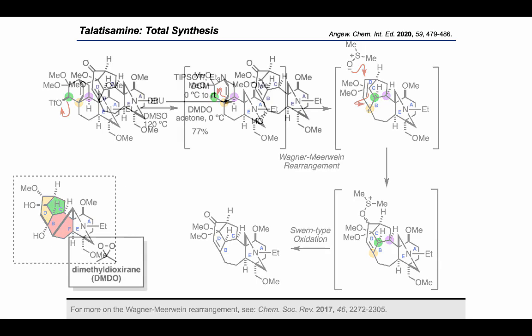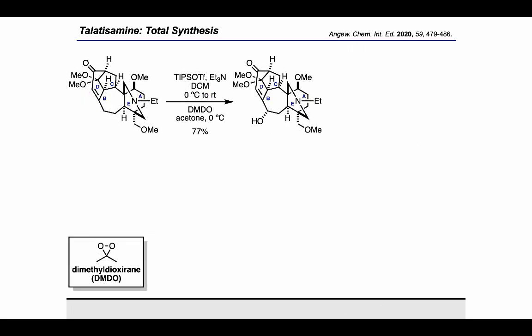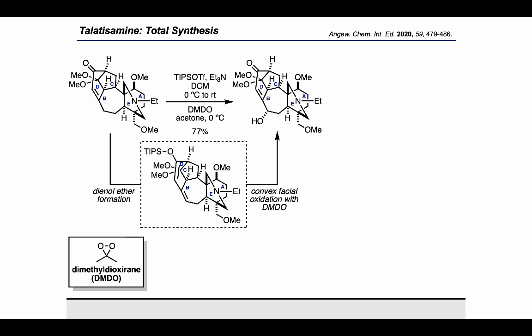To install the alkene needed to close up the remaining F-ring, they started by treating with TIPS-triflate and triethylamine, followed by DMDO, which resulted in a gamma oxidation. This occurred by generation of the dienol silyl ether, which could be oxidized from the convex face to arrive at the product.